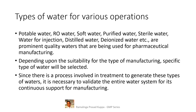Since there is a process involved in treating water to generate these types of waters, it is necessary to validate the entire water system for its continuous support to manufacturing. Any pharmaceutical process equipment must be qualified, and the process carried out in that equipment must be validated. All critical equipment for water generation and distribution must be qualified to meet design, installation, operation, and performance requirements of the treatment process. A detailed protocol is necessary to capture all critical parameters, and a detailed report after evaluating the data statistically would take you to the best water treatment system.